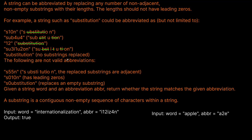Here are some non-valid abbreviations. S55 doesn't work because we can't have two adjacent substrings replaced. A leading zero is also not allowed, so that one doesn't work either. And a zero doesn't actually replace anything — as you can see, the characters of substitution are still there, so the zero just does nothing.